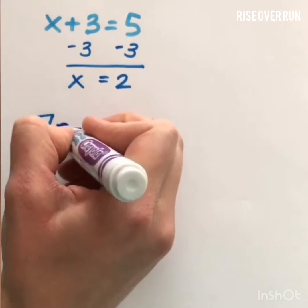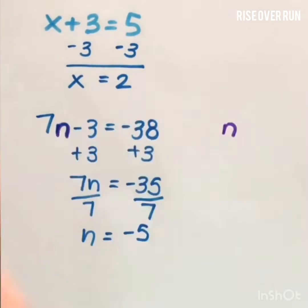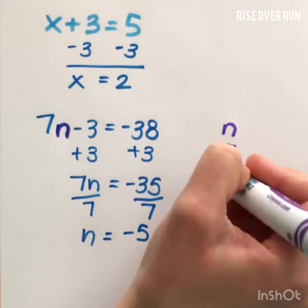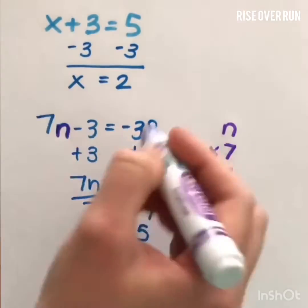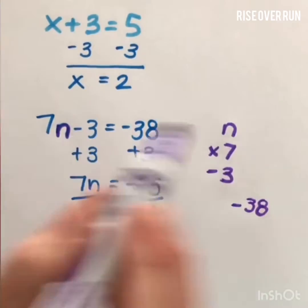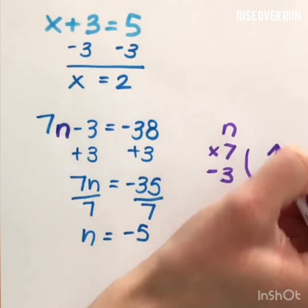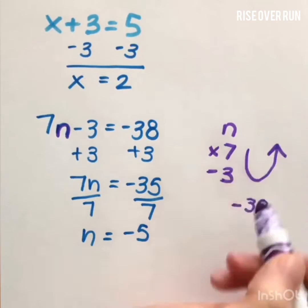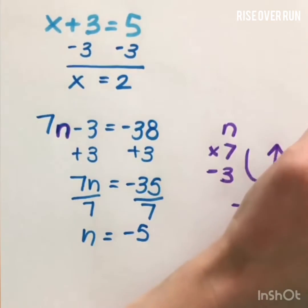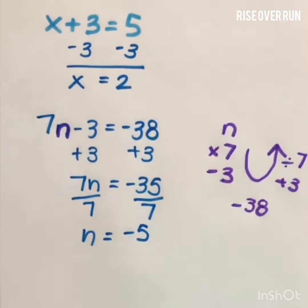So in this one, if we look at n, which is our variable, and we look at what operations happened to it, it was multiplied by 7, and then we subtracted 3 and got a value of negative 38. In order to undo everything that happened to n, we will use inverse operations backwards. So instead of subtracting 3, we added 3. Instead of multiplying by 7, we divided by 7, and that gave us the value of n. If we keep this idea in mind, it will help us solve some really complicated equations.